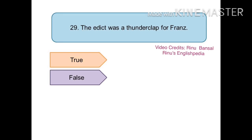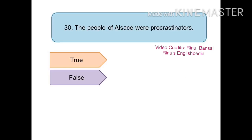The next statement is: the edict was a thunderclap for France. The right answer is true. The next statement is: the people of Alsace were procrastinators — procrastinators means people who put off their work. The right answer is true; they were procrastinators.